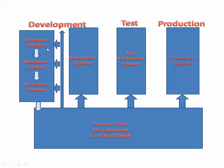The developer develops the requirement and checks in the code to the source code management — for example, SVN or GitHub. They are almost the same but there are a few feature differences. SVN is a freeware, whereas GitHub has public access but for private repositories you need to have some purchase.